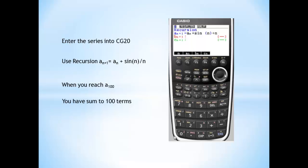Then move to the right, and we are going to define by selecting F5 to set. Starting from n equal to 1 to n equal to 100, and A sub 1 is going to be sin of 1 over 1. Press EXE, and we have set up the series.